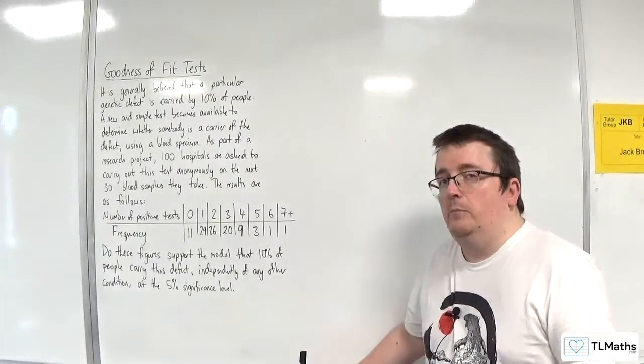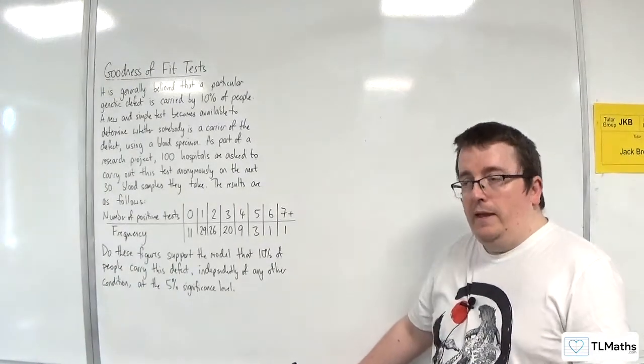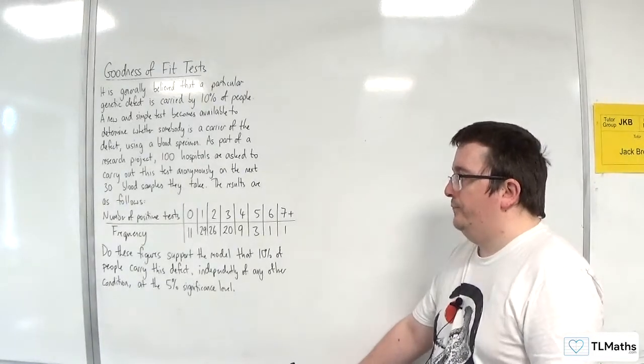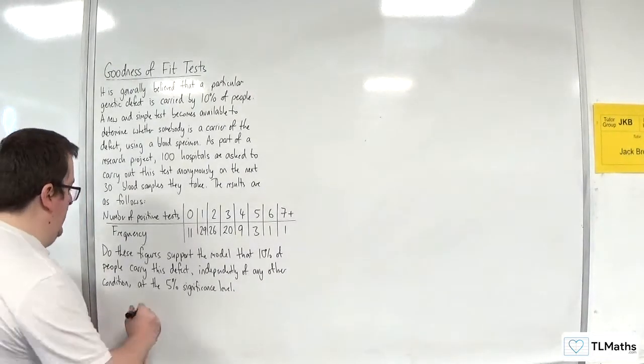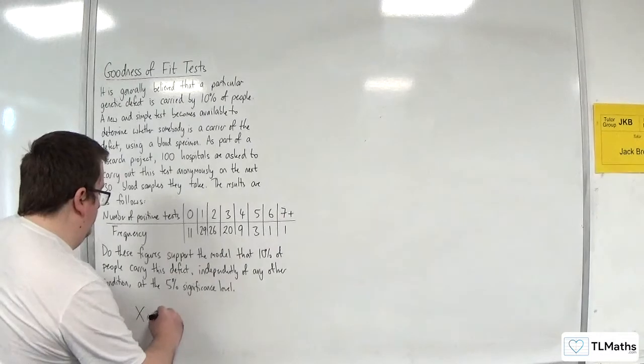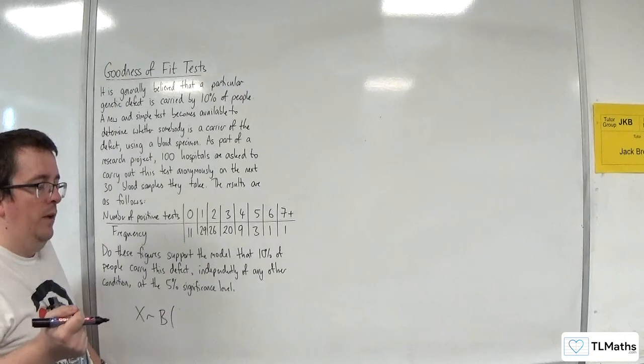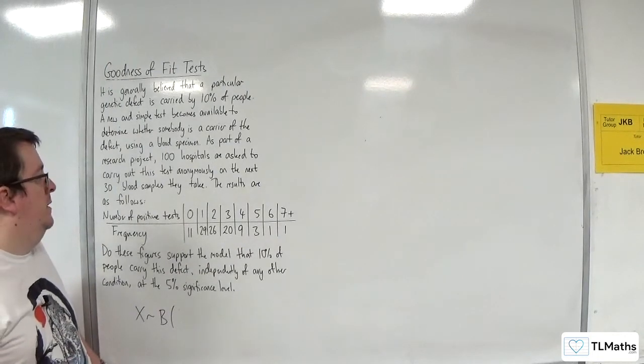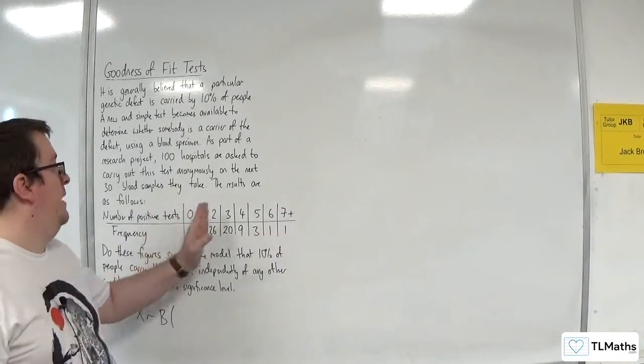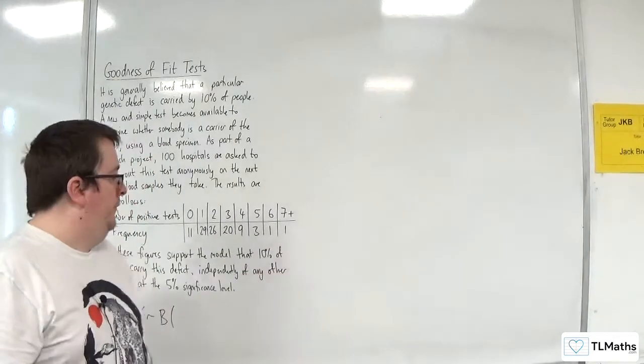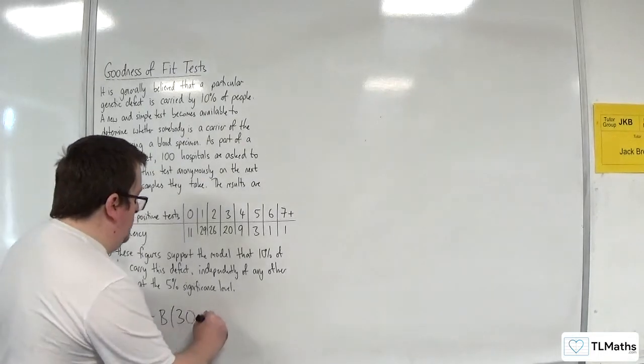Now the difference between this example and the previous example is that in this example we're given the probability P. It's 10%. So we've got the distribution. Now we've got to be a little bit careful because what are we using here for N? Be careful because it's not 7. Remember this is 7+. This table should be going up to 30. So N is 30 and P is 0.1.